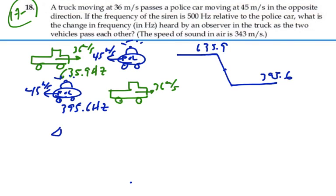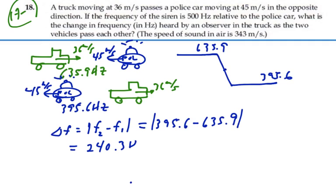So our change in frequency is actually going to be equal to the magnitude of our final frequency or our initial frequency, absolute value, since we're just looking for the change. So we are going to have 395.6 minus 635.9, absolute value. And what does that give us? 635.9 minus 395.6, 240.3 hertz. So the change in frequency when they pass each other, as observed by people in the truck, will be 240.3 hertz. As we said, that would be from one constant frequency to the next constant frequency.